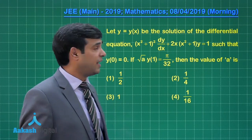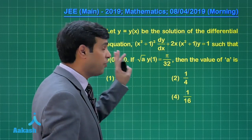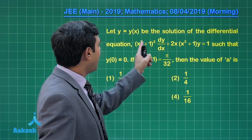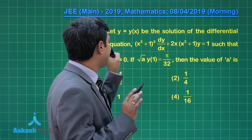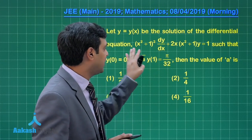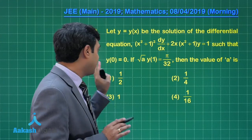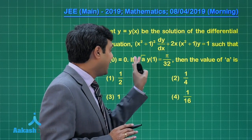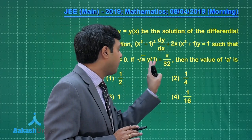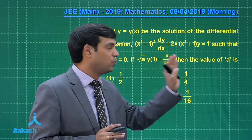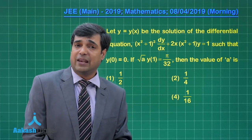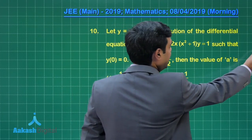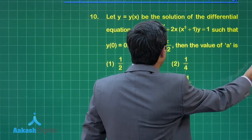Let's take question number 10 from differential equations. Let y be the solution of this differential equation such that y(0) = 0. If √a · y(1) = π/32, find the value of a. Let's see the differential equation clearly.